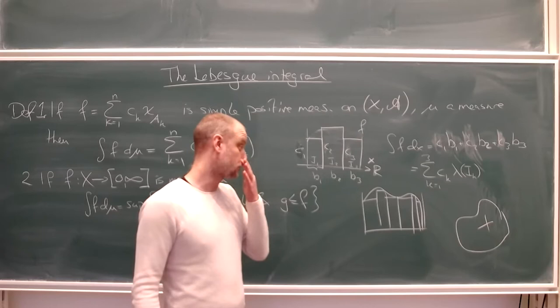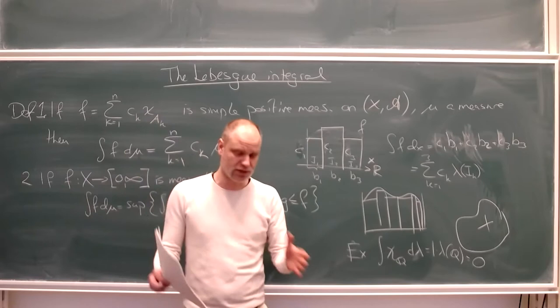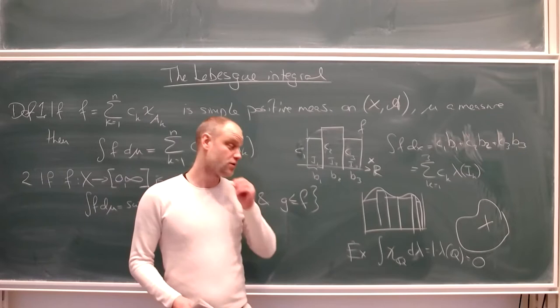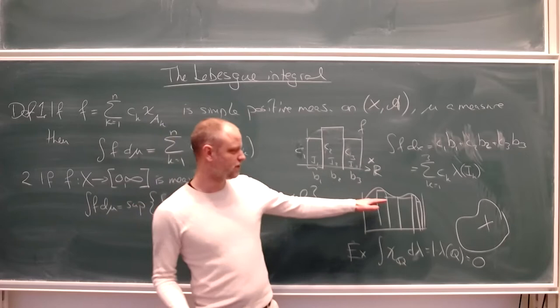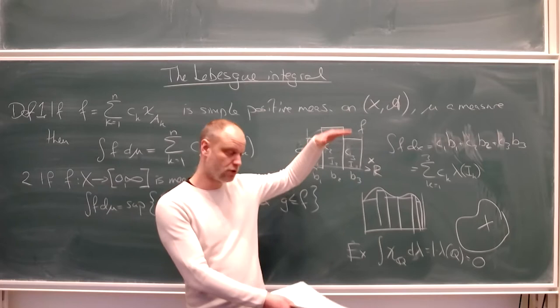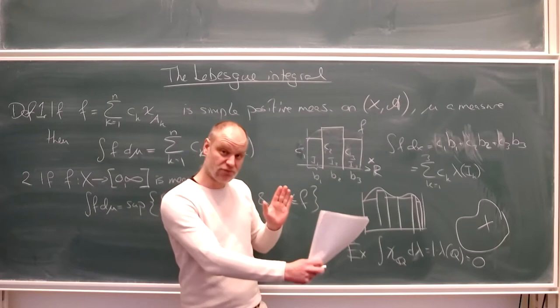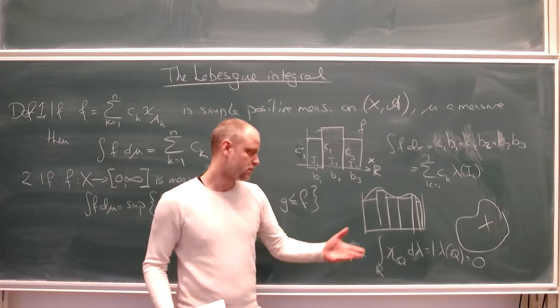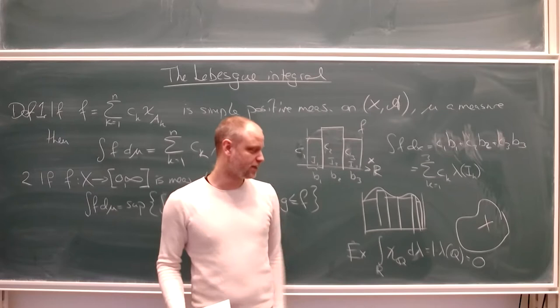For example, consider integrating the indicator of rationals from zero to one — a problem we couldn't solve with the Riemann integral. With the Lebesgue integral, the height is one and the size of that set is zero, so we get zero very easily. If we integrate over the whole real line, we still get zero.